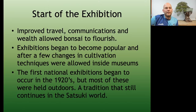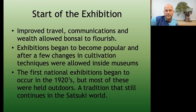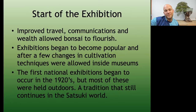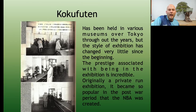Soon after this, in the 1920s, improved travel and communications, wealthy people, bonsai picking up, easy transport of trees — we start to see exhibitions happening. The first national exhibitions started in the 1920s, and many were held outdoors. Hibiya Park was a famous place for holding exhibitions. The reason was that they were using excrement as fertilizer, so the trees stank — it was very difficult to get a museum or exhibition space to accept them. It wasn't until cultivation techniques were changed that they could start putting exhibitions on in museums.